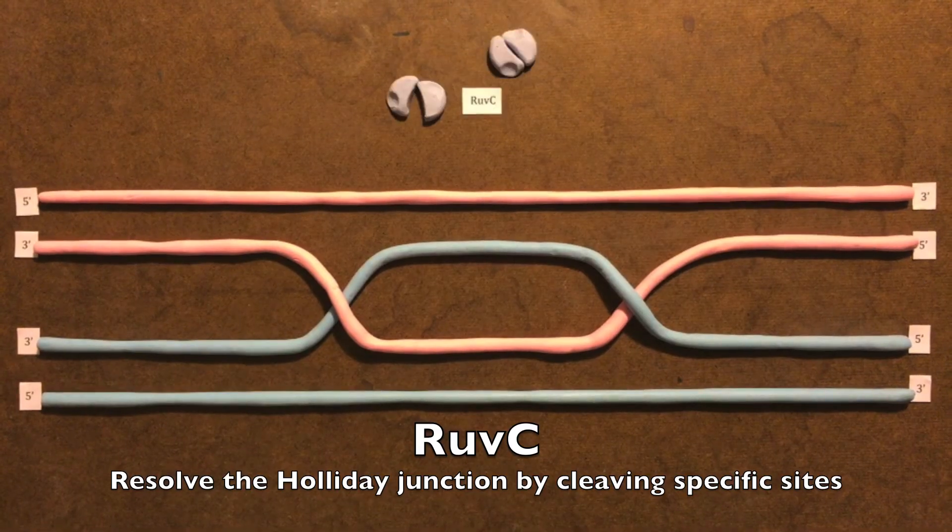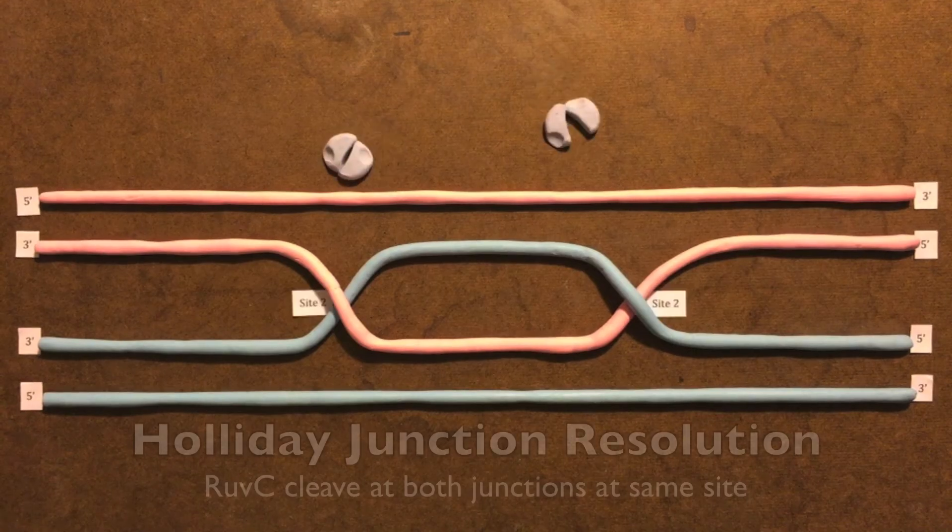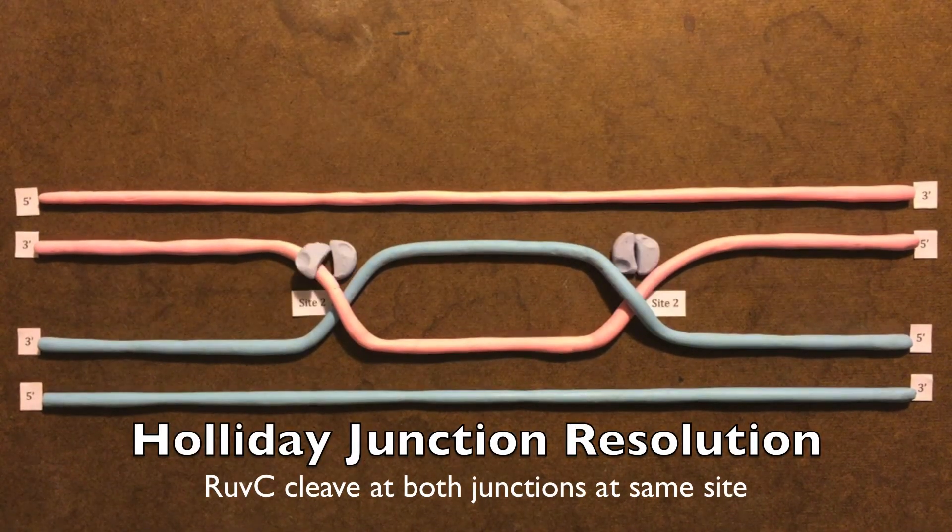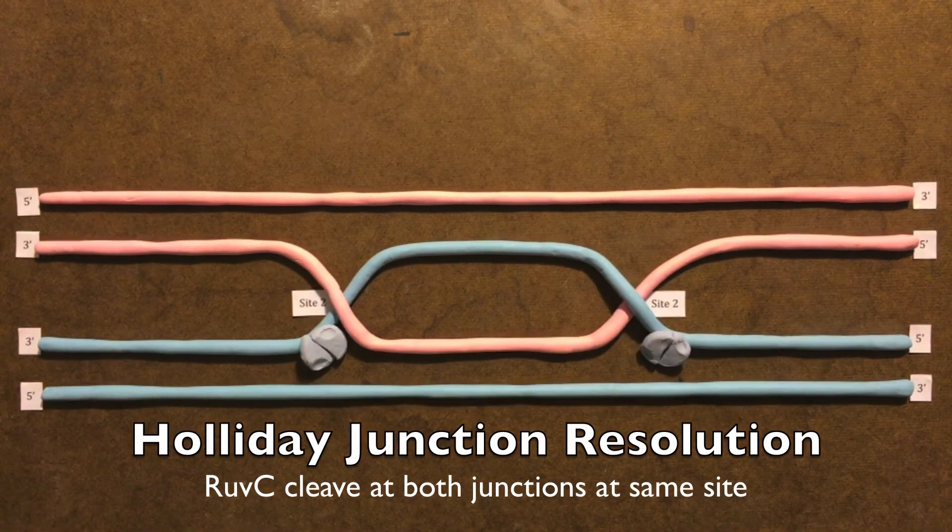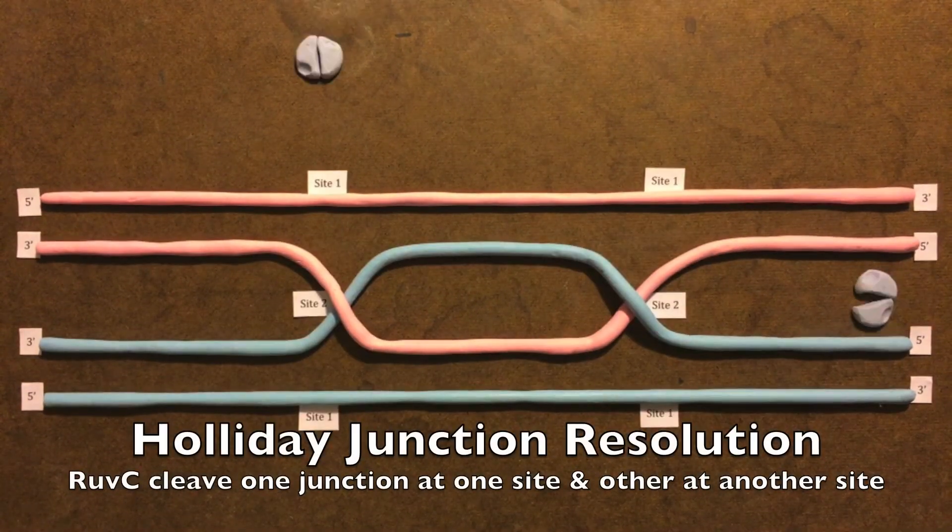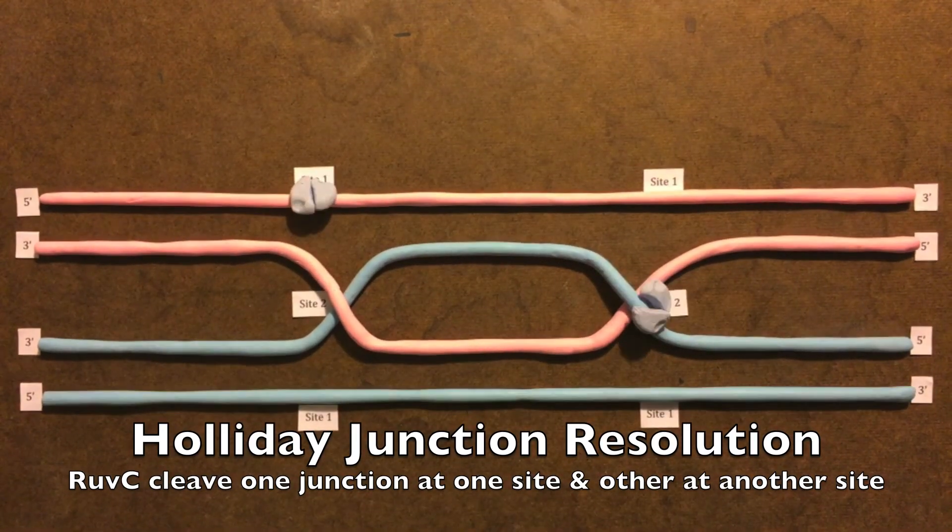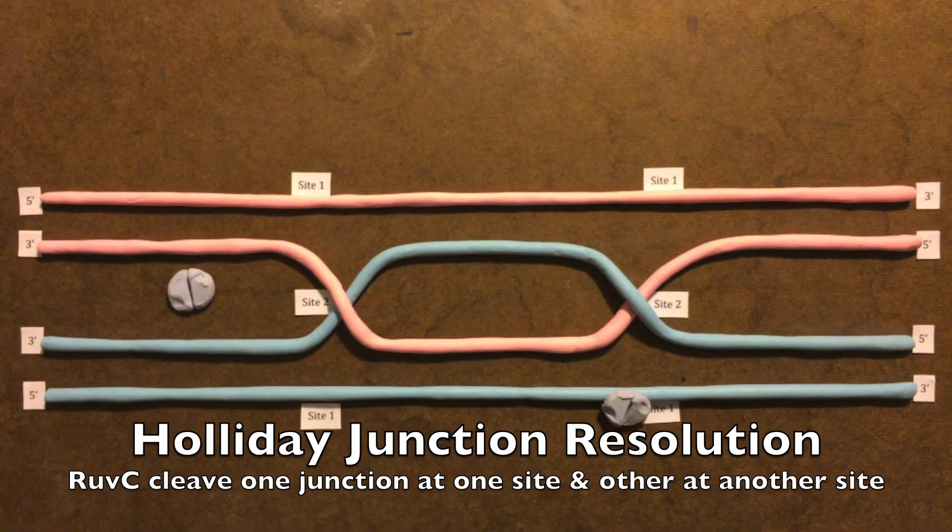The holiday junction is resolved with a dimeric protein called Ruv-C. It recognizes and binds to the junction. It cleaves the two homologous DNA strands that contain the same polarity. Ruv-C can cleave both junctions at the same time to create patches, or cleave junctions at different points to form splices.